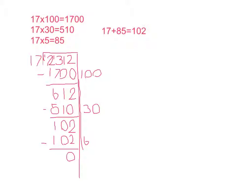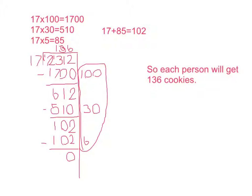Then I will add all of these numbers together. So, each person will get 136 cookies. That is the end of this problem.